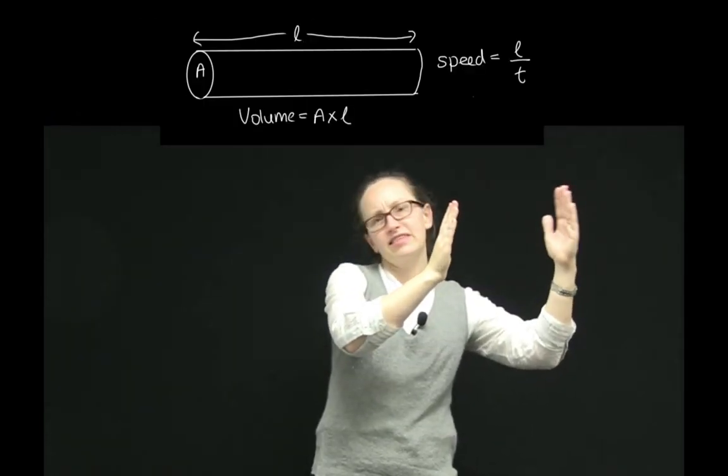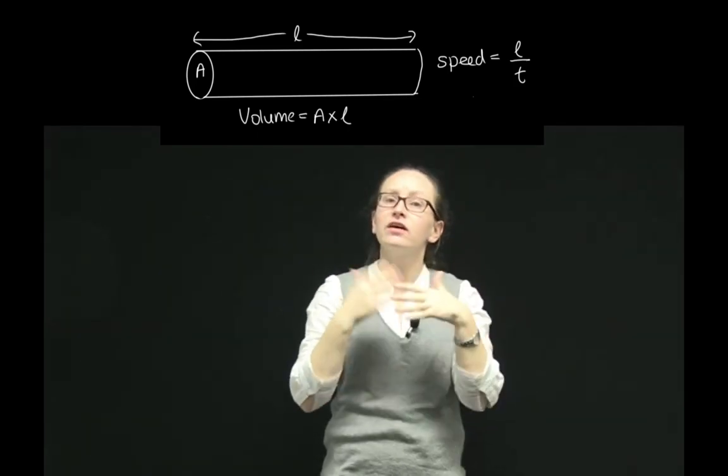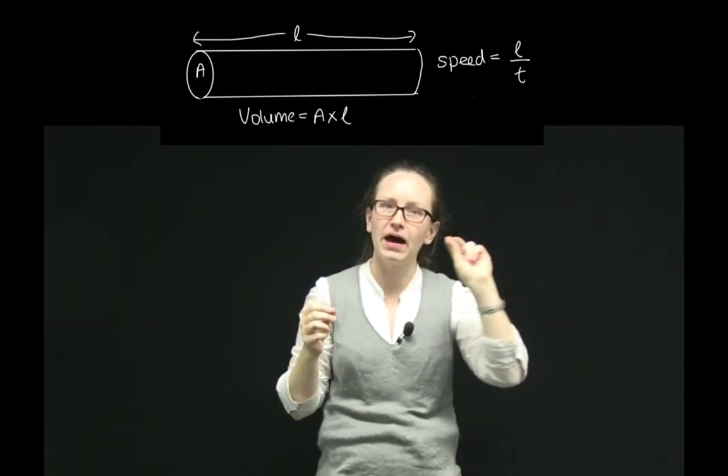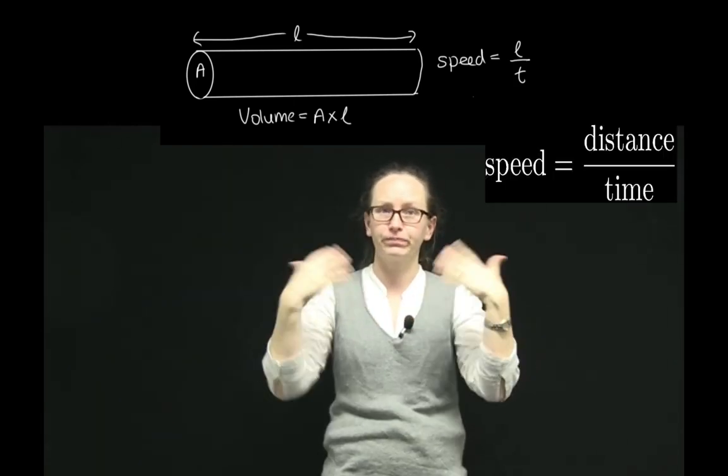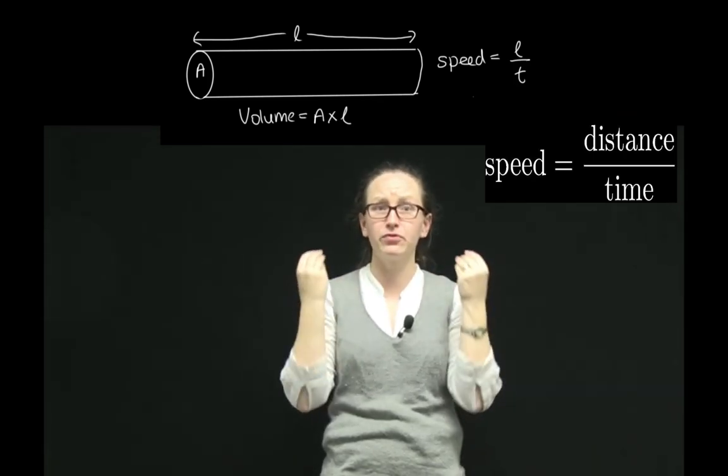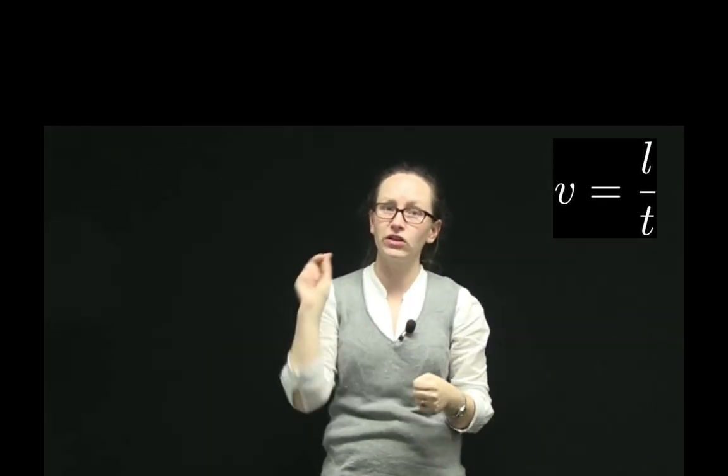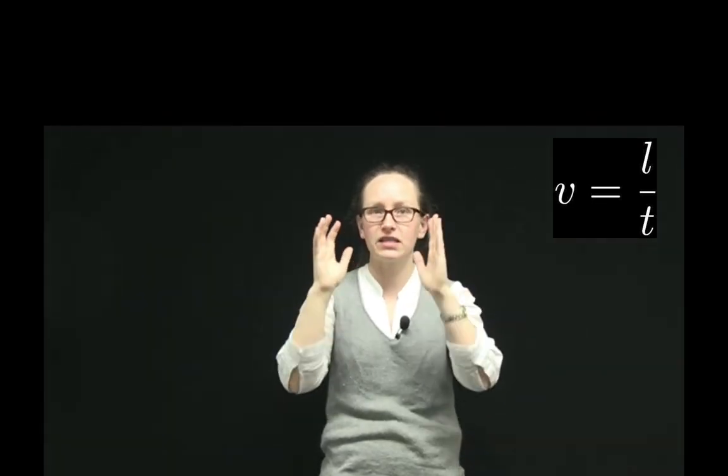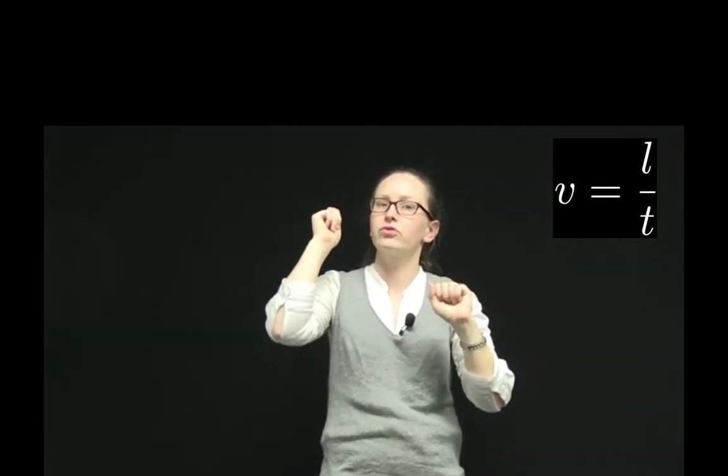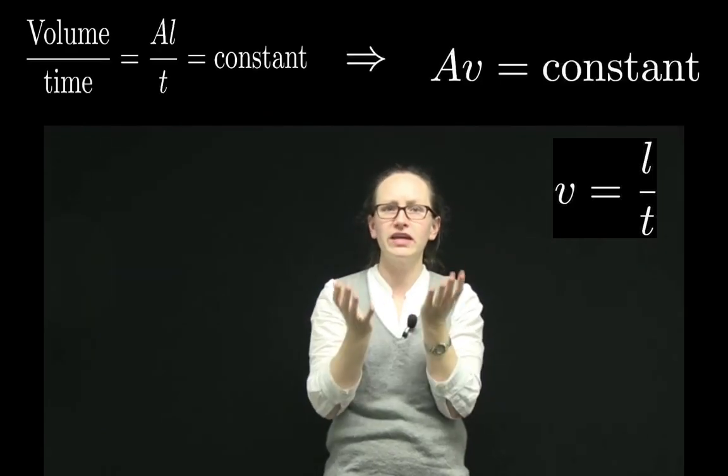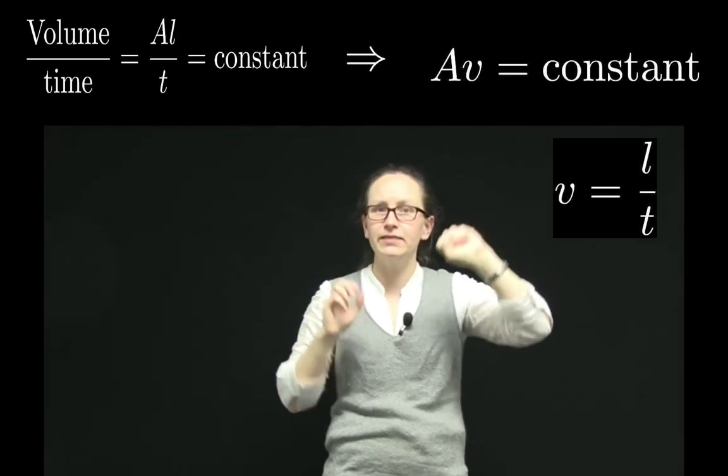Now, the length that that water flows through over the time is actually just the speed of the water through the pipe, because speed is just the distance traveled over the time. So we're going to give that the symbol v, v for speed, because speed is very similar to velocity. So the length traveled over the time is equal to v. And so we can write our equation as the surface area times the velocity is constant. So this gives us the equation A1*v1 is equal to A2*v2.